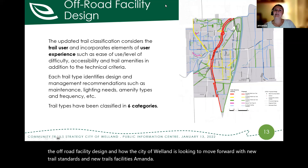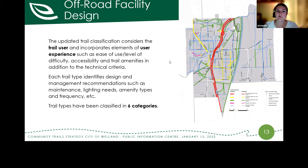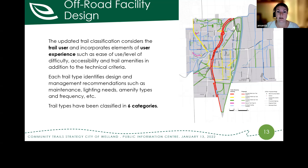For off-road facility design, the updated trail classification considers trail users and incorporates elements of user experience such as ease of travel, difficulty, accessibility, and trail amenities, in addition to typical technical criteria about construction and maintenance. Each trail type identifies design and management recommendations including maintenance, lighting needs, and amenity types and frequency — so there's a consistent expectation for each trail type. We've put these trail classifications into six types, and looking at the map, you'll see a nice range throughout the community with a lot of north-south connections and some really nice east-west distribution.